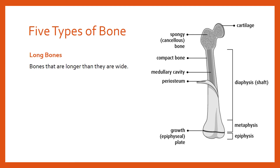The first type, or classification, of bone is long bones. These are bones that are longer than they are wide — a classic cartoon-looking bone with a shaft in the middle and two bulky extremities. The shaft is called the diaphysis, and the bulky extremities at either end are called the epiphysis, or epiphyses in the plural.